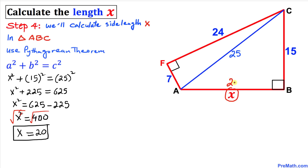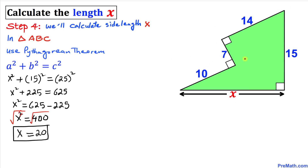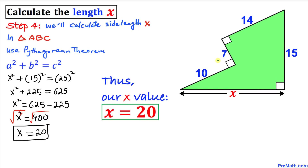So our X value turns out to be 20. We have successfully found the unknown side, which turns out to be 20 units. After all those multiple steps, the unknown side X of this irregular pentagon turns out to be 20 units — and that's our final answer. Thanks for watching, and please don't forget to subscribe to my channel for more exciting videos. Bye!